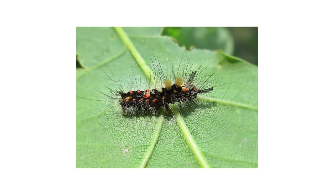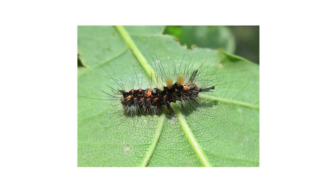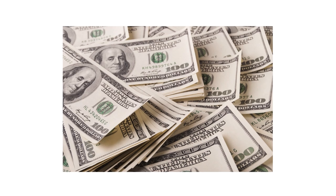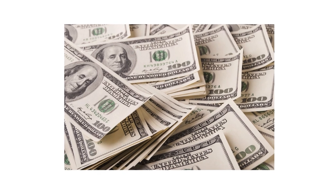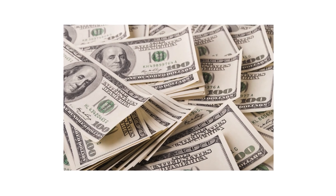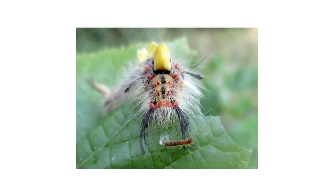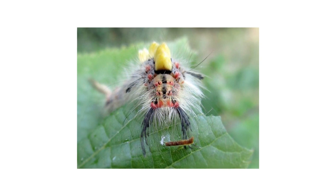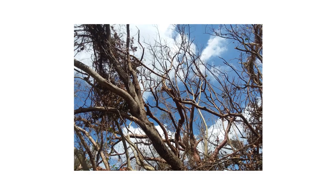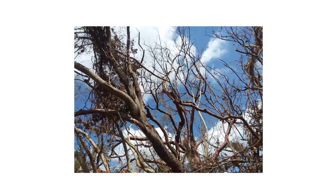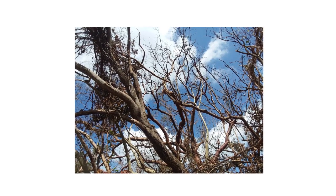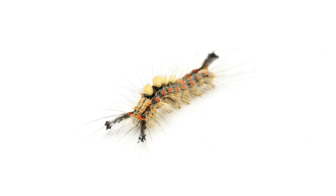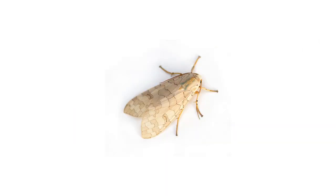The first thing you should do in any pest control plan is identify exactly what you're dealing with. Careless identification can lead to wrong treatment methods, costing you time and money. Tussock moth caterpillars are a major pest in the United States, known for defoliating thousands of acres of forest in the past.